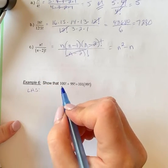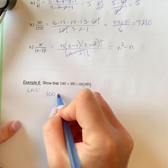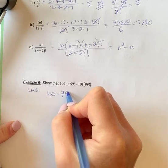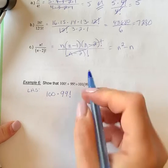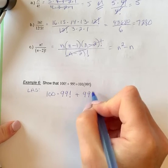What I'm going to do is write 100, and if I was starting to count down with my factorials, I'm just going to stop at 99. So I'll write this as 100 times 99 factorial plus 99 factorial.